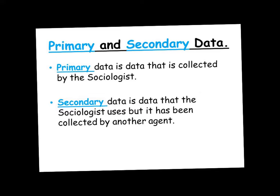The names we give to these two types of data are primary and secondary data. Primary data is data that the sociologist has collected first hand. Secondary data is data that the sociologist uses, but it's been collected by another agent — meaning it's been collected by somebody else, whether that's the government, the mass media, or a diary entry written by somebody.